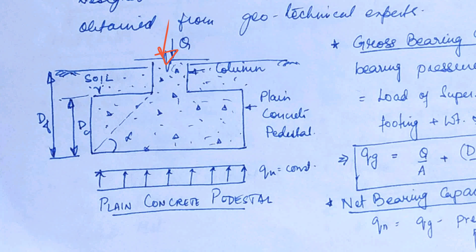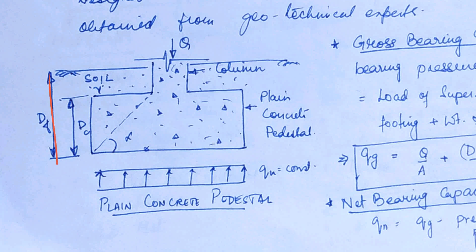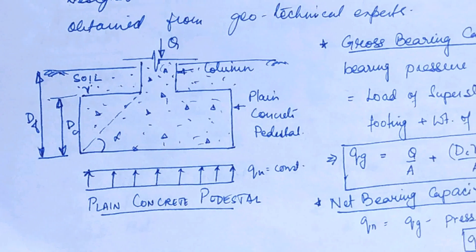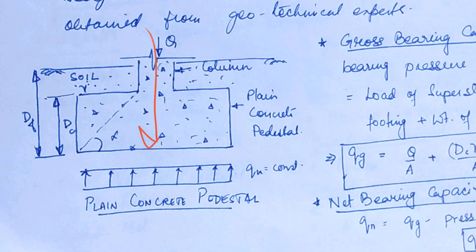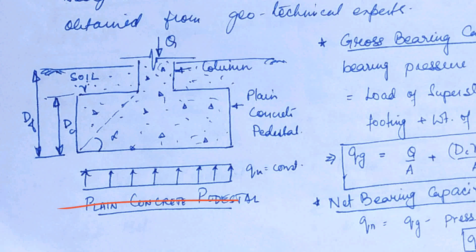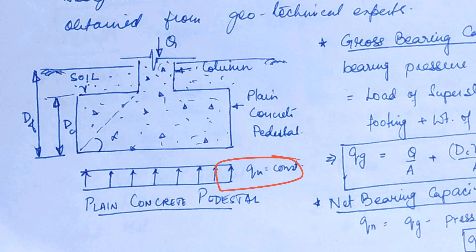The load Q is acting here and this is your plain concrete pedestal-type footing with depth DC, and the total depth of footing is DF. This is your column resting on the footing; soil is retained here. Because of this action force, a normal reaction will act from the soil on the footing.